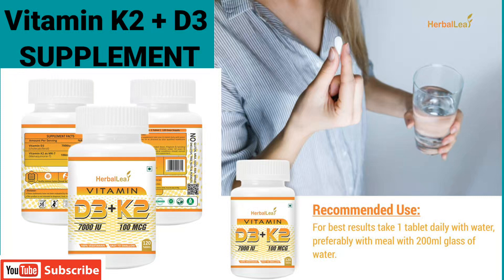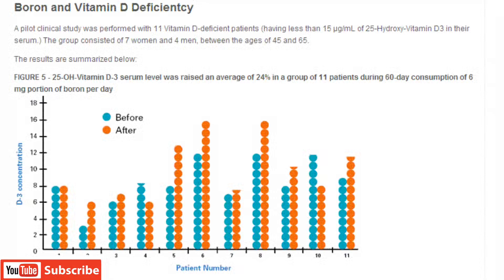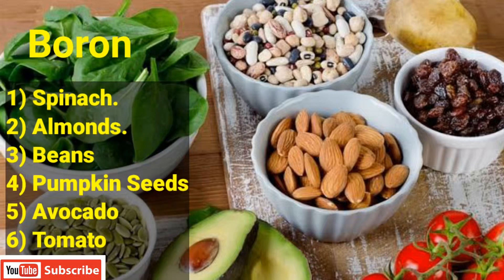Boron is essential for growth and maintenance of bone. It beneficially impacts the body's use of estrogen, testosterone, and vitamin D. It boosts magnesium absorption and decreases inflammation. Studies have found that boron can increase vitamin D levels in serum by 24% within 60 days. Boron-rich foods include spinach, almonds, beans, pumpkin seeds, avocado, tomato, and raisins.